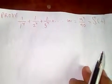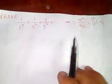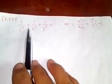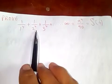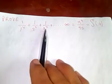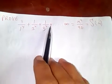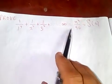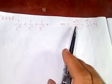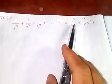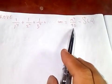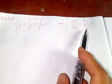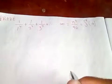Thanks for watching my video. Today I'm going to prove that 1 over 1 to the power 4, plus 1 over 2 to the power 4, plus 1 over 3 to the power 4, and so on up to infinity, equals π to the power 4 over 90, which is equal to the Riemann zeta function of 4.